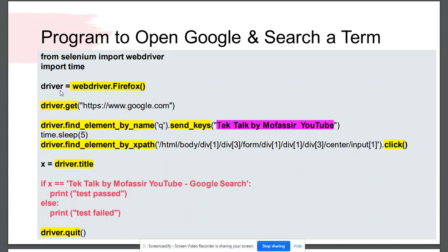I am creating the instance of Firefox with the name driver, then using the get method to open the Google page. Then I'm using find_element_by_name and send_keys to type in the Google search bar 'Tech Talk by Mofassir YouTube'.